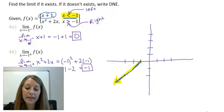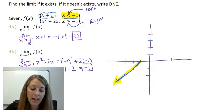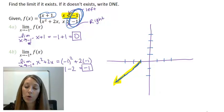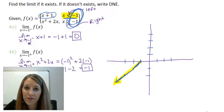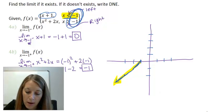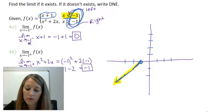Since the first piece is defined for x strictly less than negative 1 (not equal to), there is no point defined at negative 1 itself, so I mark that endpoint with an open circle.